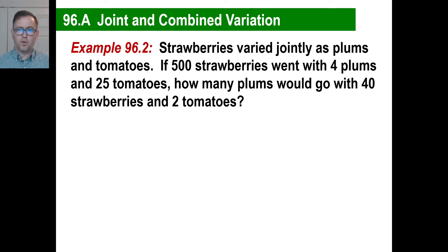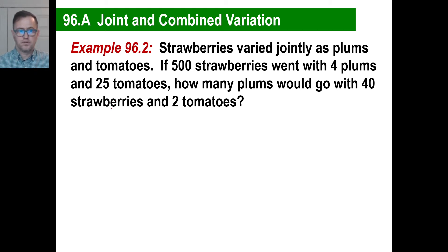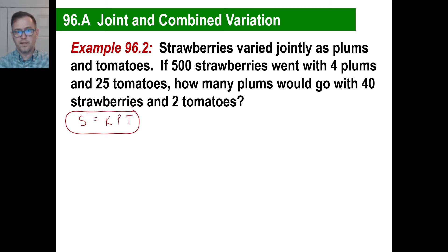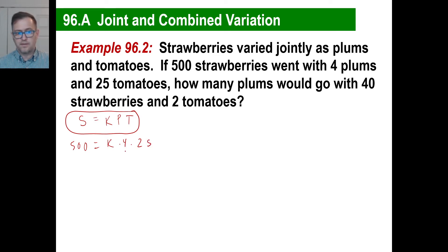Let's try another one. Strawberries varied jointly as plums and tomatoes. Now what this means is there is no inverse at all — no division. They're both direct variation. So strawberries equals k times plums times tomatoes — that's our basic joint variation equation. We have 500 strawberries with 4 plums and 25 tomatoes. 4 times 25 is 100, so 100 times k is 500, which means k is 5.